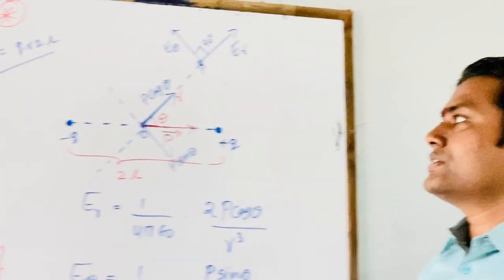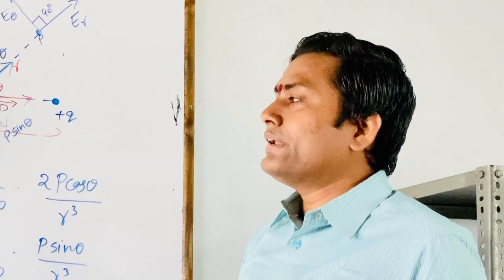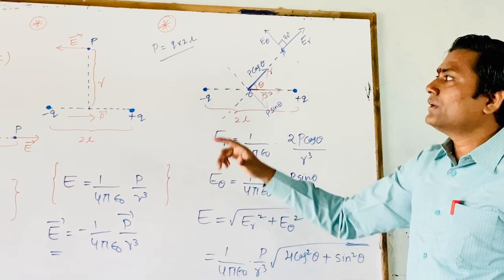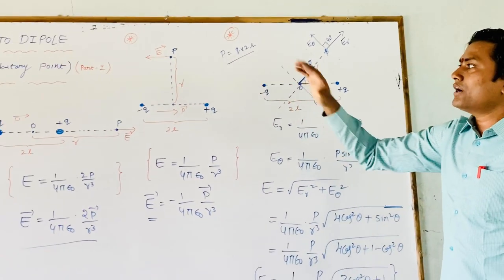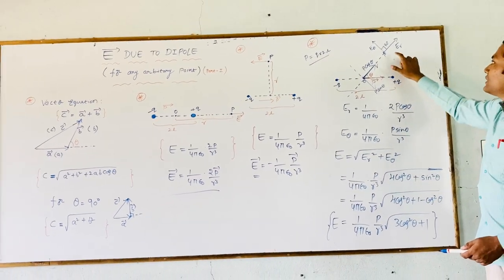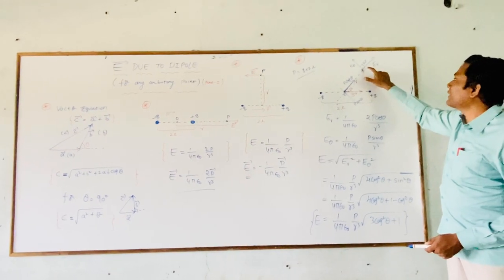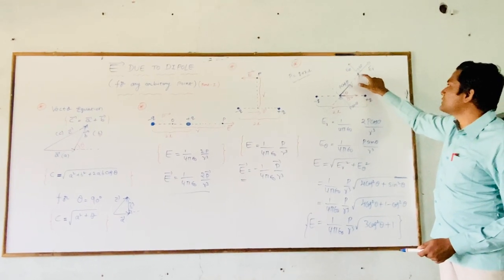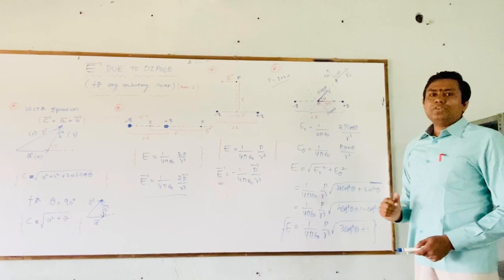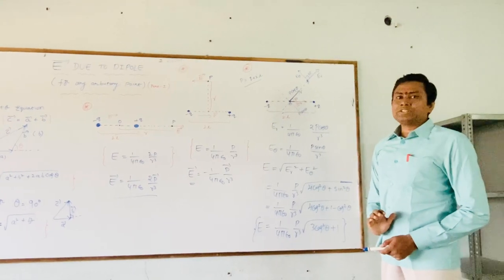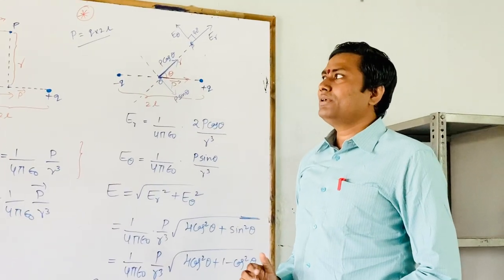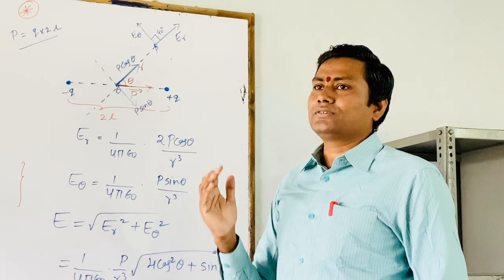This is today's lecture. In the next lecture, we will continue this topic as part 2. At that time, we will discuss what is the direction of the resultant electric field at point P. I hope you understood this lecture well. In the next video, we will meet with this continuation. Thank you.